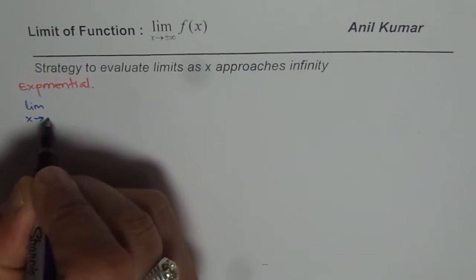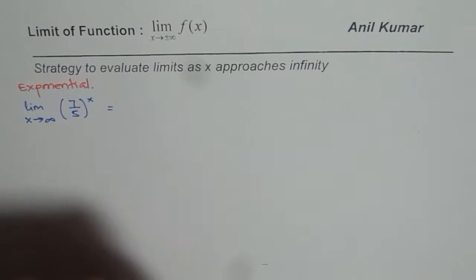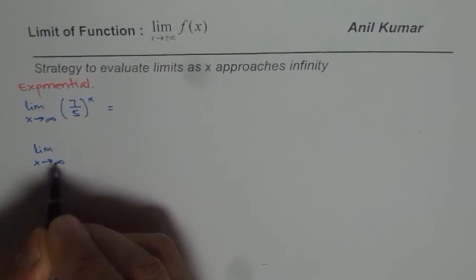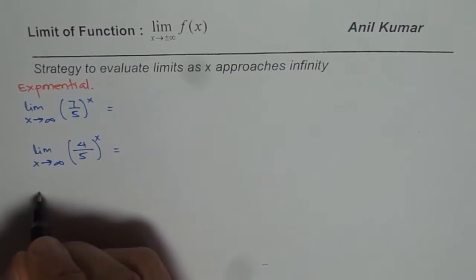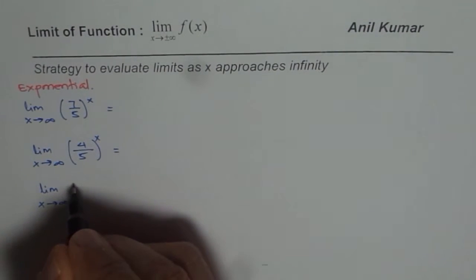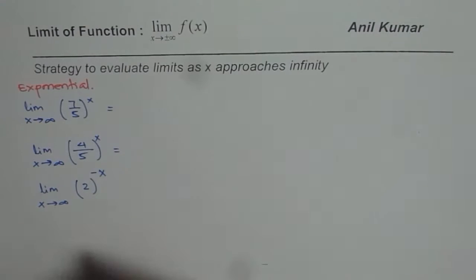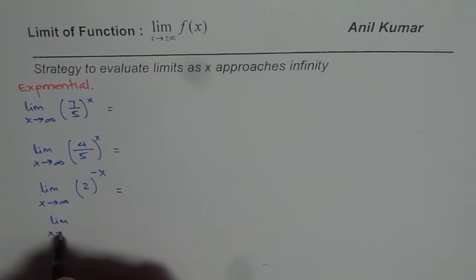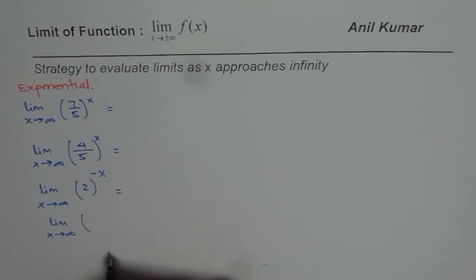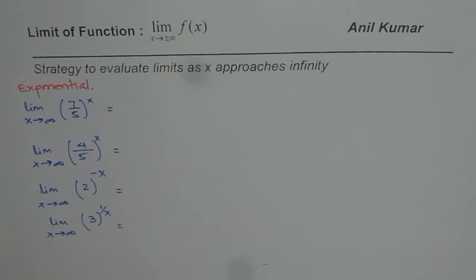So let's say x approaches infinity and the function is 7 over 5 to the power of x — find this answer. Then we have limit as x approaches infinity of 4 over 5 to the power of x. Or we could have x approaches positive infinity with 2 to the power of minus x. We could also have limit as x approaches infinity of 3 to the power of 1 over x. So that's a good variety of exponential function questions.